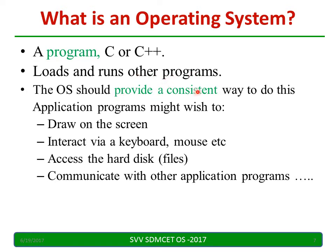The OS should provide a consistent way to handle many things. For example, an application program might wish to draw something on the screen — the OS should support that. It may want to interact with a keyboard, mouse, or other input/output devices — that should be supported by the OS. A program may want to access or update a file stored on the hard disk — the OS should support that too. Communication between application programs should also be supported. Throughout this subject we are going to discuss OS functions and how it does all these things.